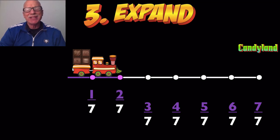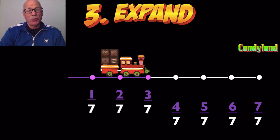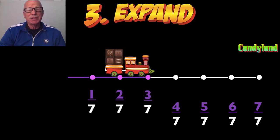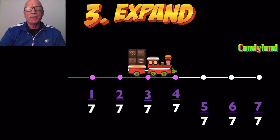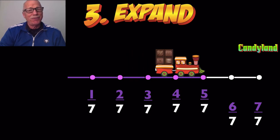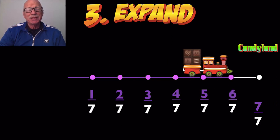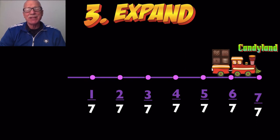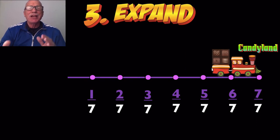Two of the seven parts of the whole trip. Three of the seven parts. Four of the seven parts. Now it's five of the seven parts of the whole trip.